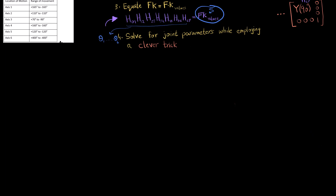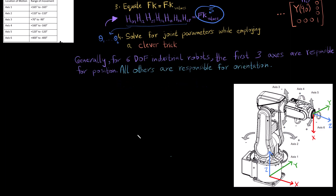To understand what the clever trick is, let me draw out the robot again. Generally, for a six degree of freedom industrial robot, the first three rotations are responsible for the position of the robot, and the rest of the rotations are only responsible for the orientation. My first rotation is this one, my second rotation is about this axis, and my third rotation is about this one.